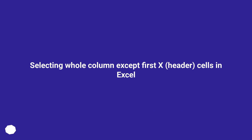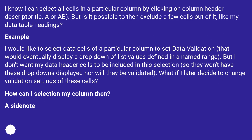Selecting whole column except first X header cells in Excel. I know I can select all cells in a particular column by clicking on the column header descriptor, like E, A, or AB. But is it possible to then exclude a few cells out of it, like my data table headings?